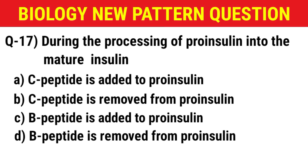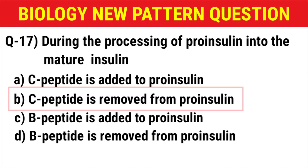Next question: During the processing of proinsulin into mature insulin — (A) C peptide is added to proinsulin, (B) C peptide is removed from proinsulin, (C) B peptide is added to proinsulin, (D) B peptide is removed from proinsulin. The correct answer is option B: C peptide is removed from proinsulin.